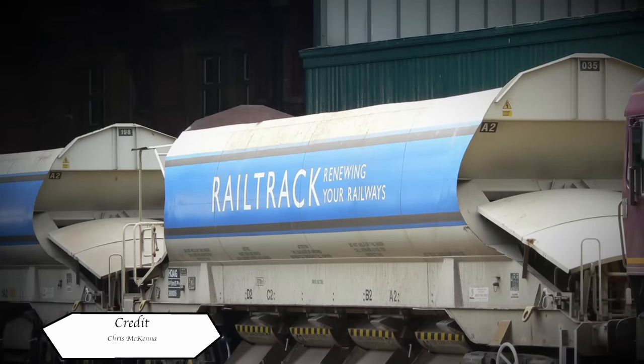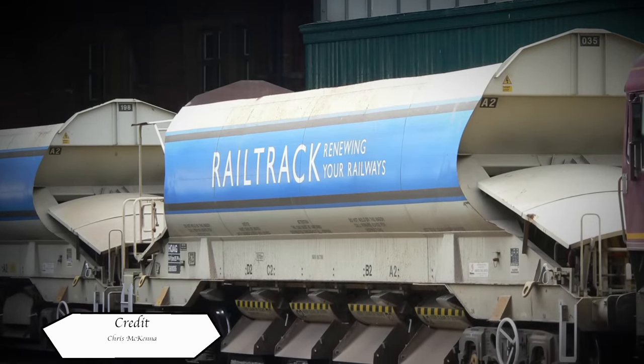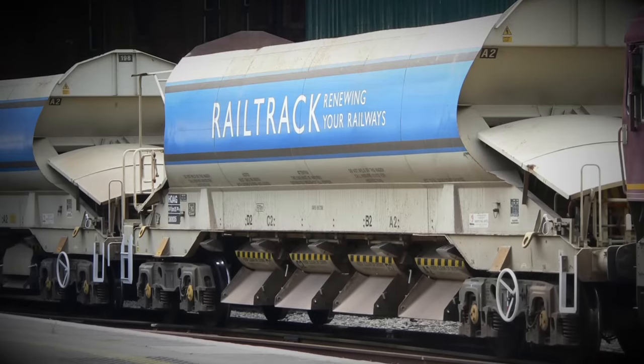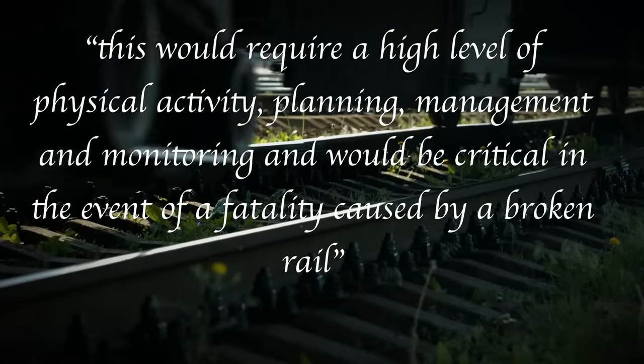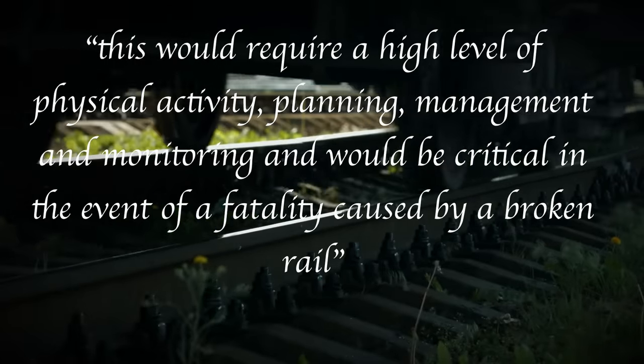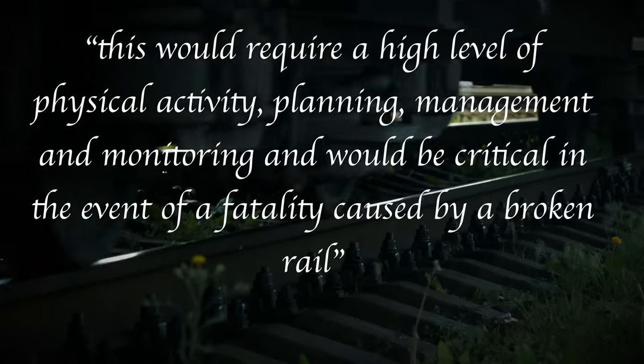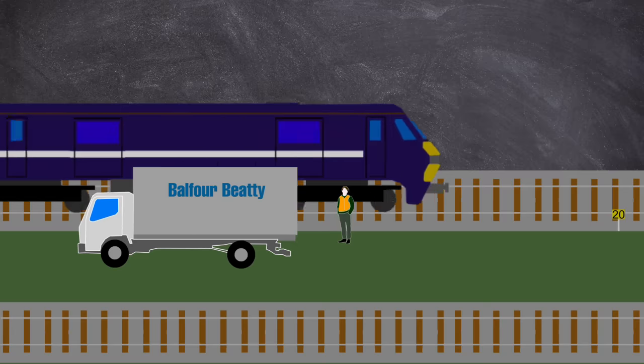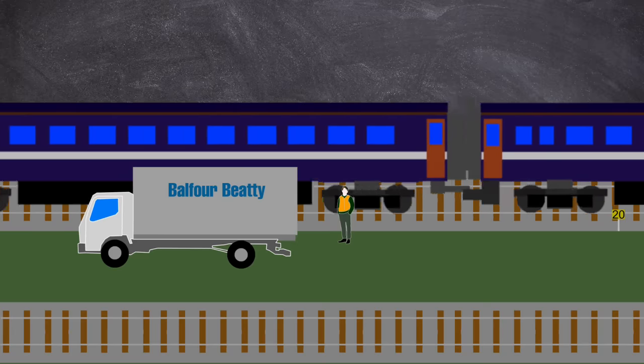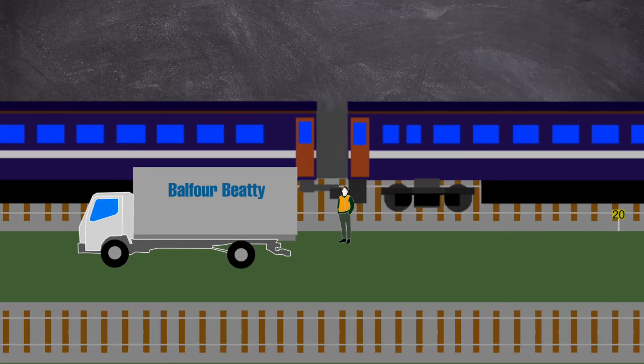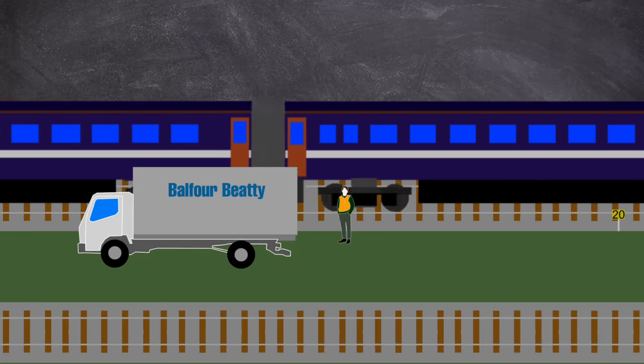Issues of broken rail was well known by Rail Track in the late 1990s when they would even say during a London North Eastern Zone committee meeting, this would require a high level of physical activity, planning, management and monitoring and would be critical in the event of a fatality caused by a broken rail. It would seem that the infrastructure was breaking down and broken rails on very fast lines were becoming even more common.